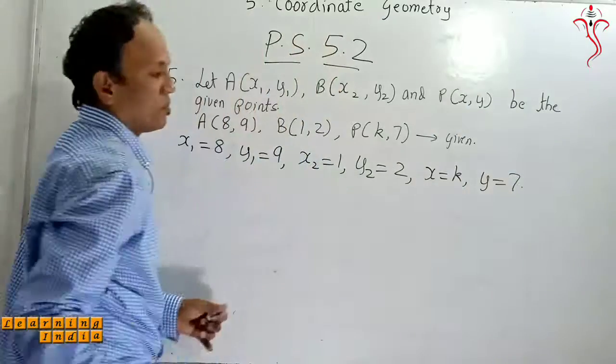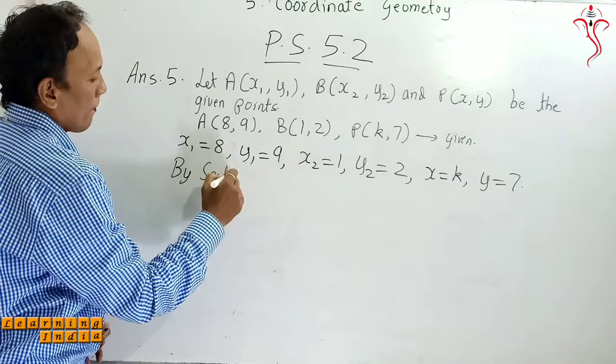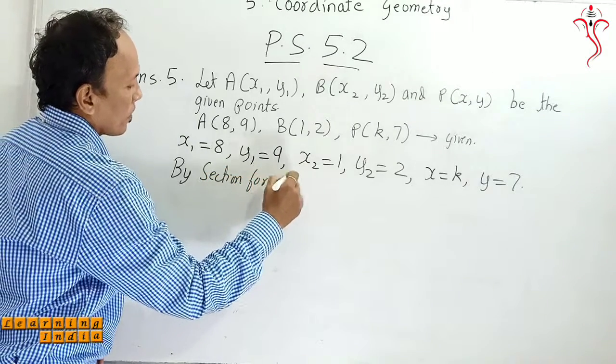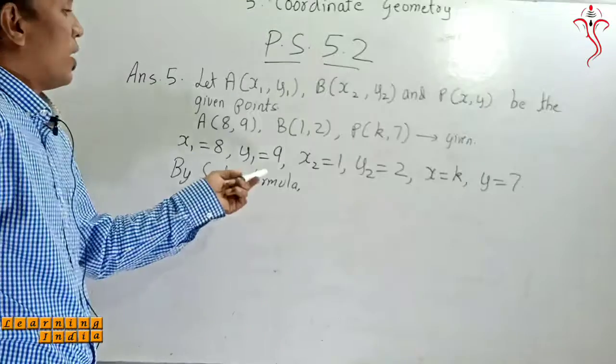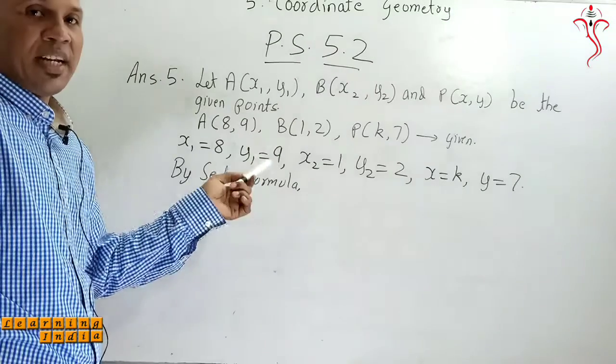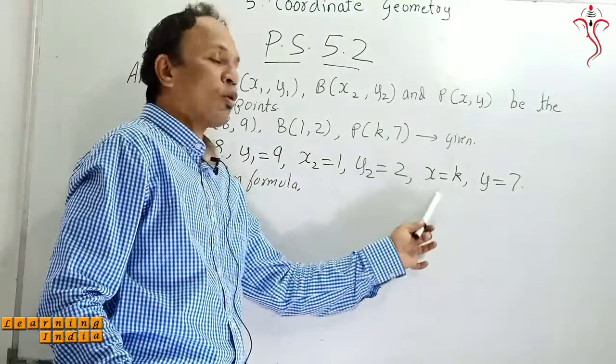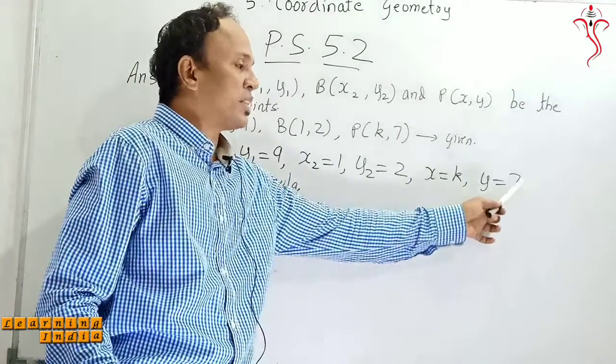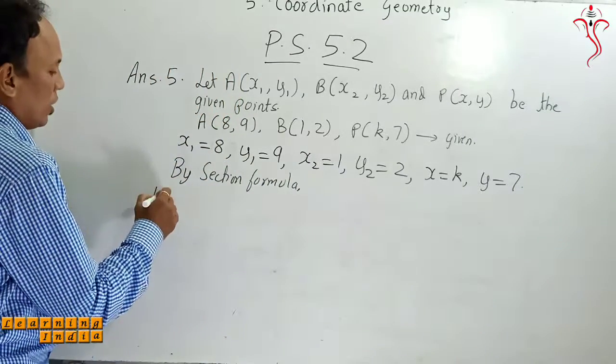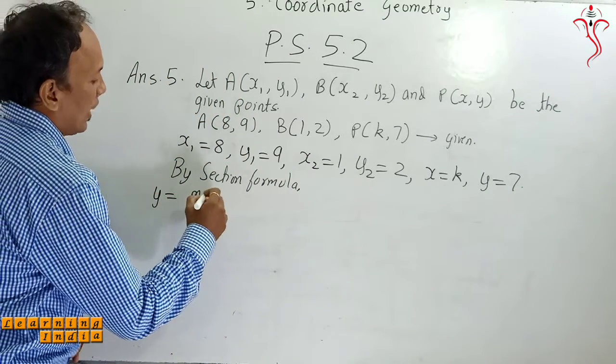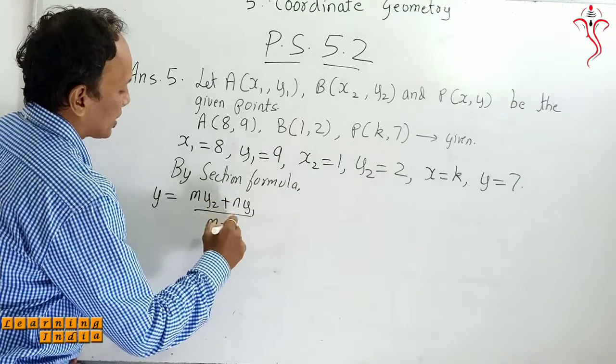So write here by section formula. What is section formula? X is equal to MX2 plus NX1 upon M plus N, and Y is equal to MY2 plus NY1 upon M plus N.